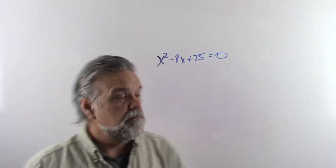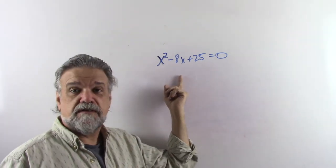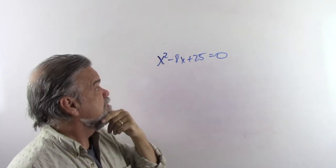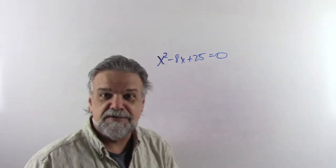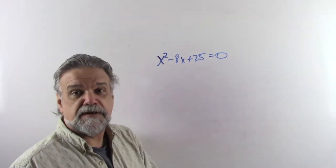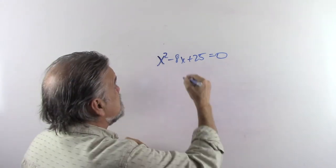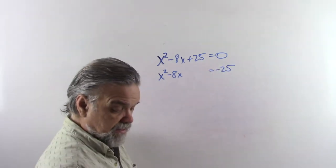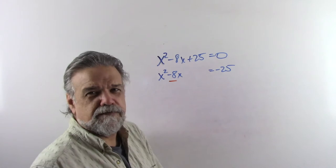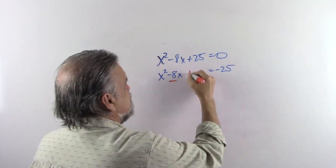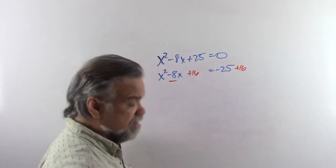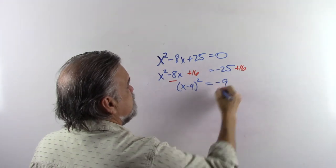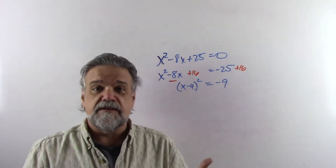Well, if you're finding the roots of a quadratic equation, complex numbers might very well appear. Let's say we want to find the zeros of this quadratic equation, set equal to zero. I'm going to do this by completing the square. I'll have x² minus 8x equals negative 25, and since half of 8 is 4, and 4² is 16, I'll add 16 to both sides. What I end up with is (x minus 4)² equals negative 9.